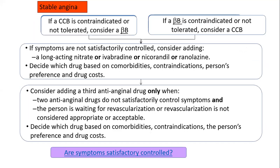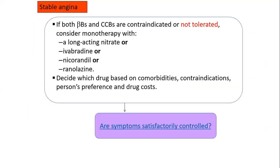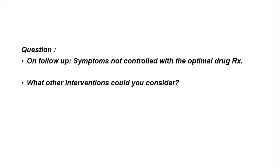If beta blockers or calcium channel blockers are contraindicated or not tolerated, other anti-anginal drugs are considered: long-acting nitrates, ivabradine, nicorandil, ranolazine, and other anti-anginal drugs. In the clinical scenario, the patient was put on optimal drug treatment, couldn't tolerate beta blockers and calcium channel blockers, was given another anti-anginal drug, but did not respond. What would be the next intervention?